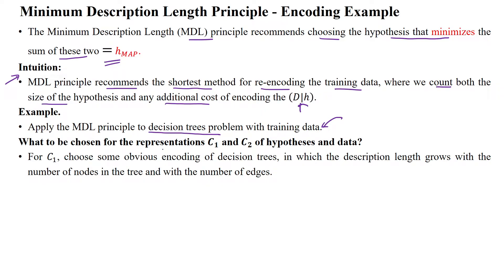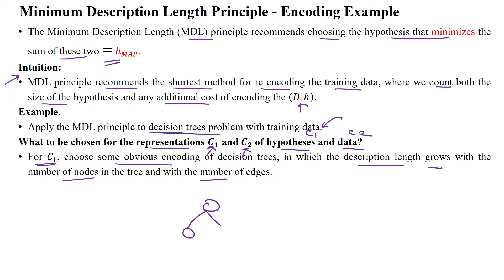For representations, code C1 is chosen for the hypothesis and code C2 for the data. For code C1, we choose an obvious encoding of decision trees in which the description length grows with the number of nodes and edges in the tree. As nodes and edges grow in the tree, the message description length keeps increasing.